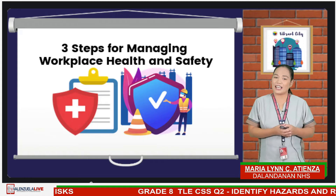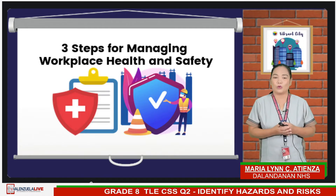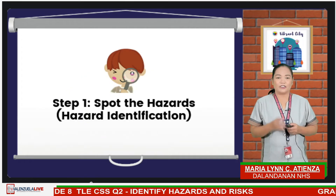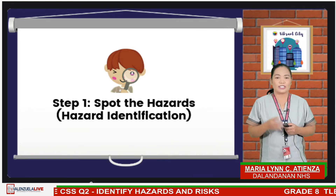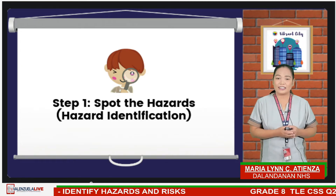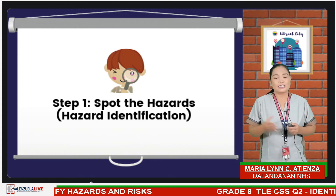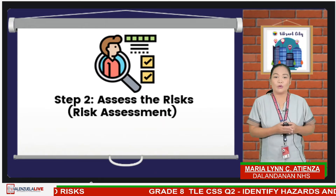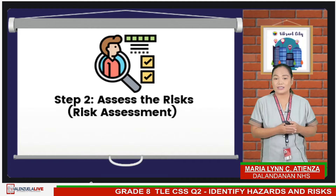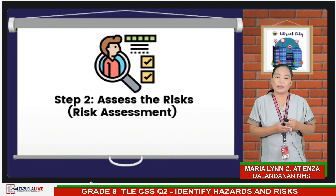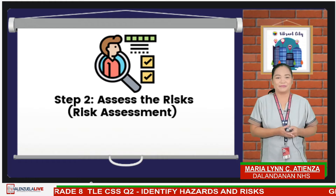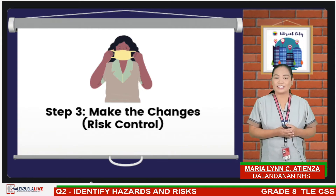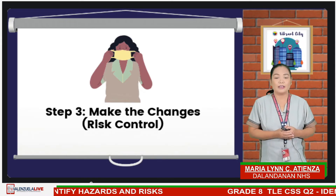Now, these are the steps on how we can manage health and safety in the workplace. There are three steps. The first is hazard identification—spot the hazards and identify anything that could hurt you or someone else. Second is risk assessment—think about how likely a hazard will harm someone and how serious the harm could be. And the third is risk control—make the changes and fix the hazards by yourself or with the help of a professional.